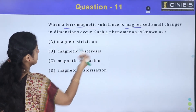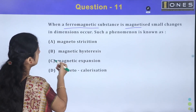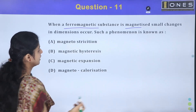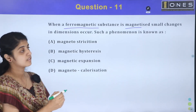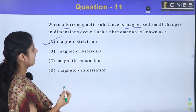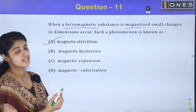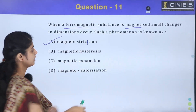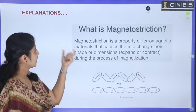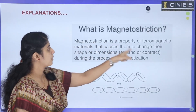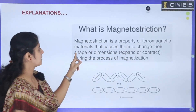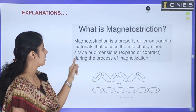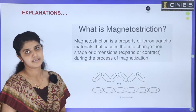The options are: magnetostriction, magnetic hysteresis, magnetic expansion, or magneto-calorization. The answer is magnetostriction. Magnetostriction is a property of ferromagnetic material that causes them to change their shape or dimensions during the process of magnetization.